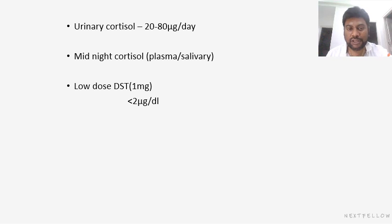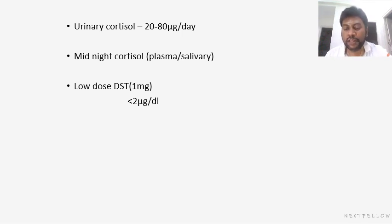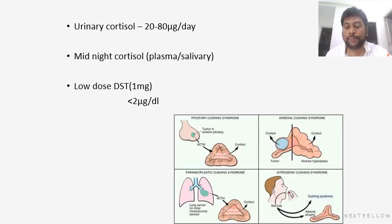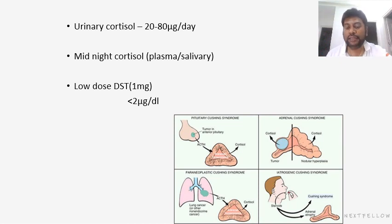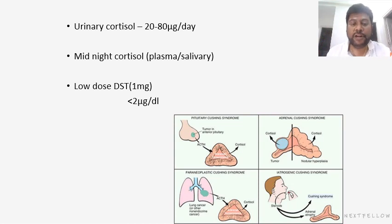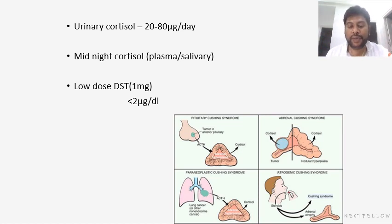Once you have made the diagnosis, the next step is to identify the cause of Cushing's syndrome. There are four major causes. First, the problem may be in the adrenal gland. Second, it may be in the pituitary gland, which we also call Cushing's disease. Third, it can be due to ectopic ACTH production. And finally, it can be due to iatrogenic causes, which is due to exogenous administration of steroids. Now we will see how to identify the exact cause for the particular patient.